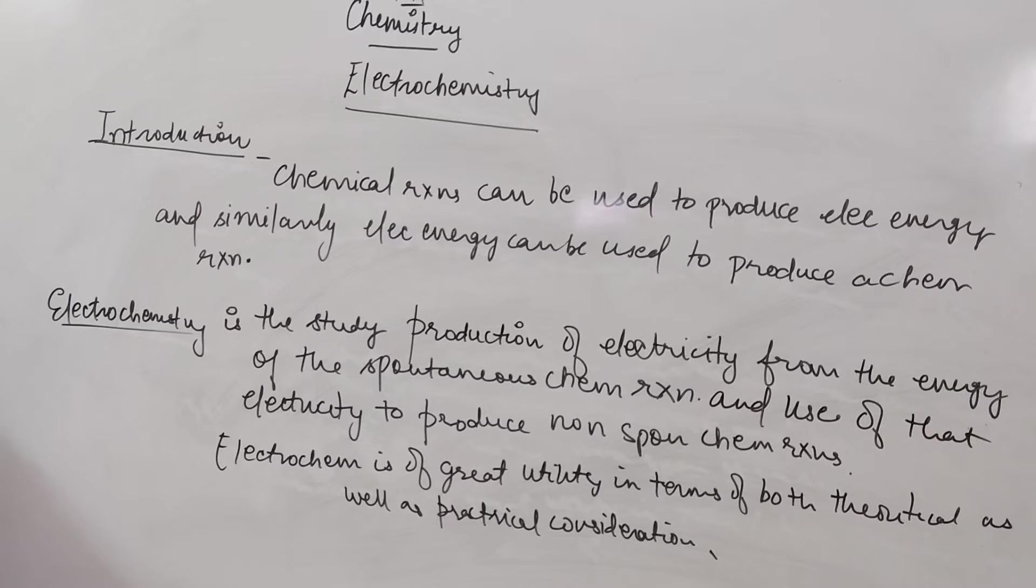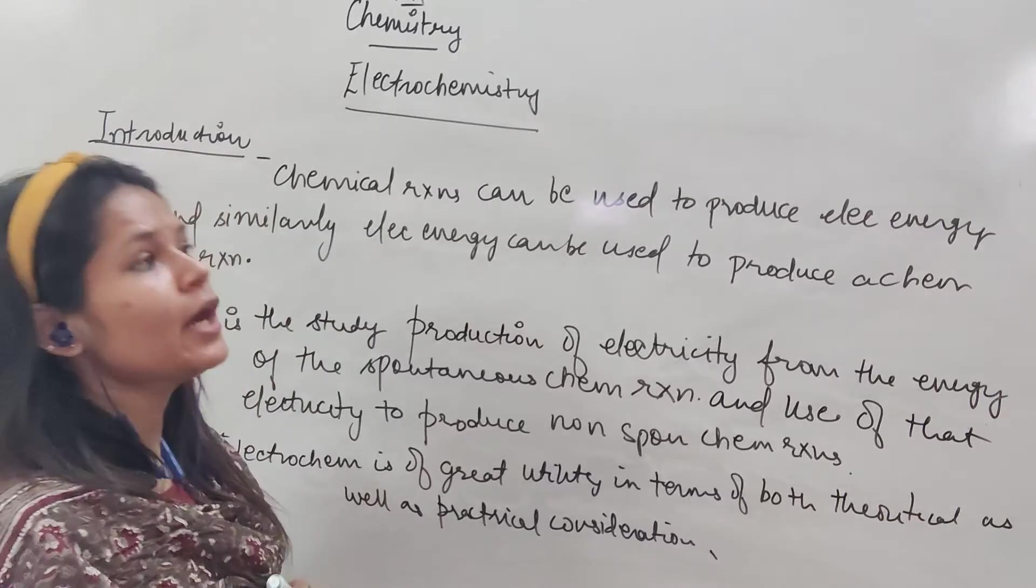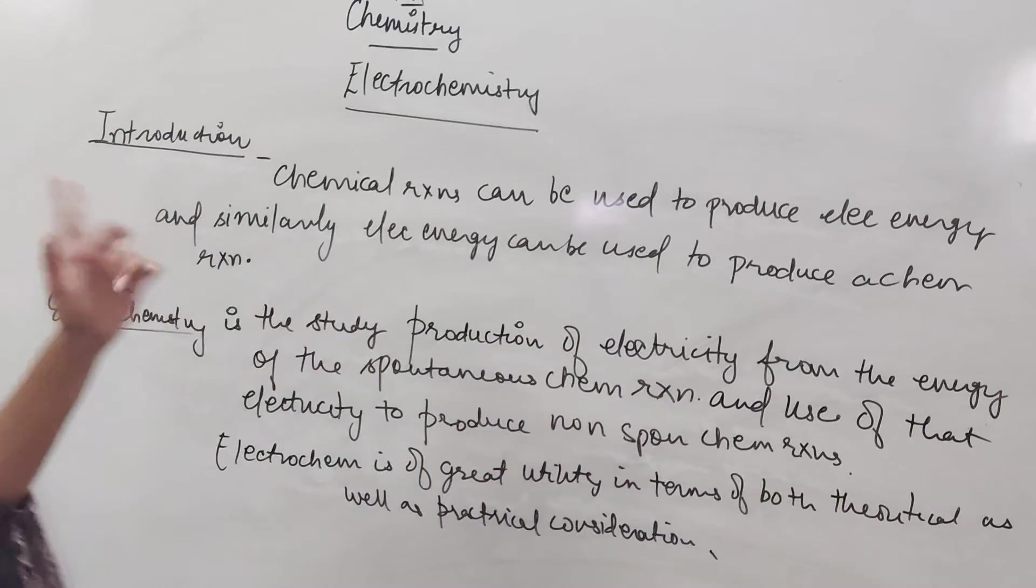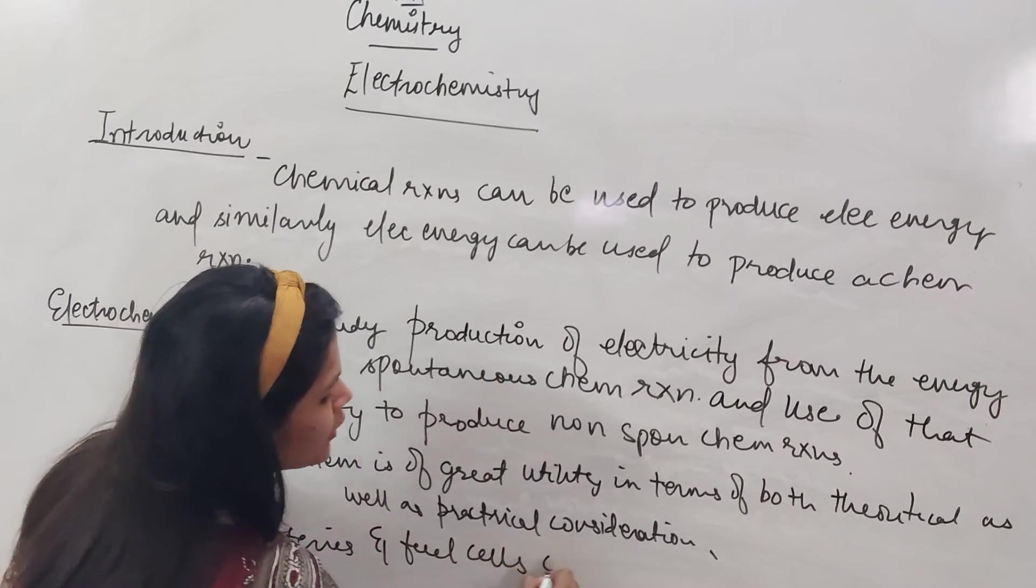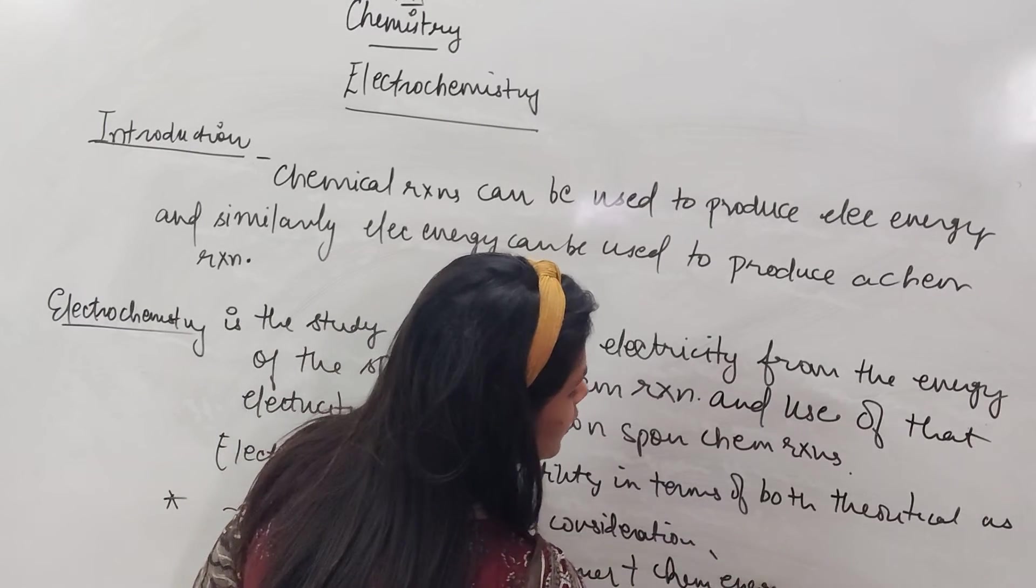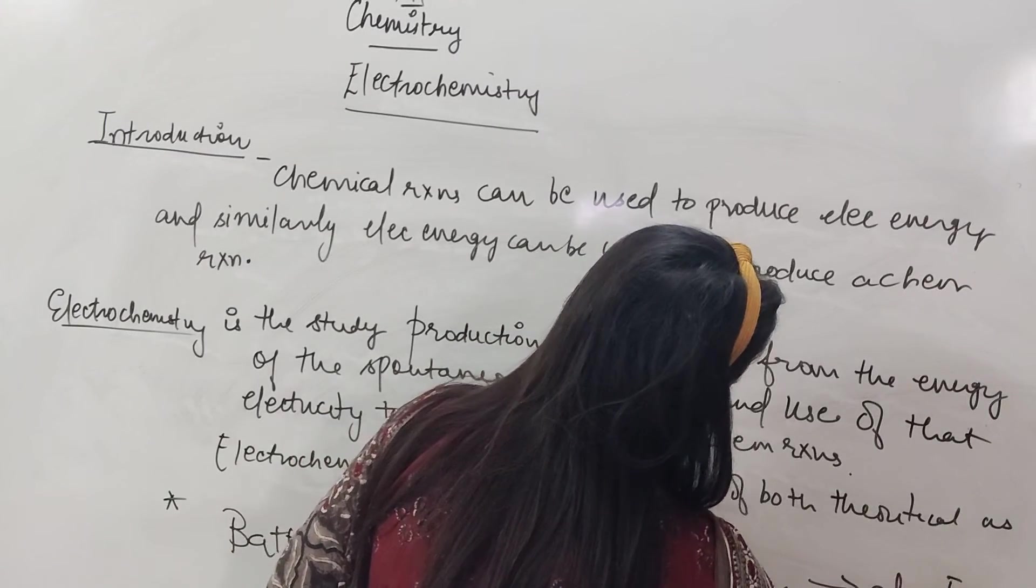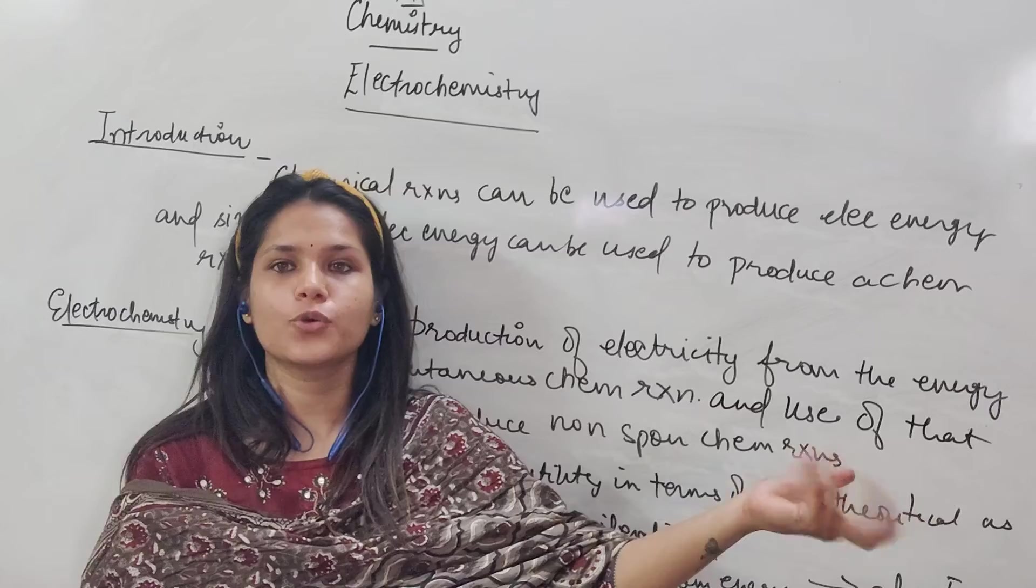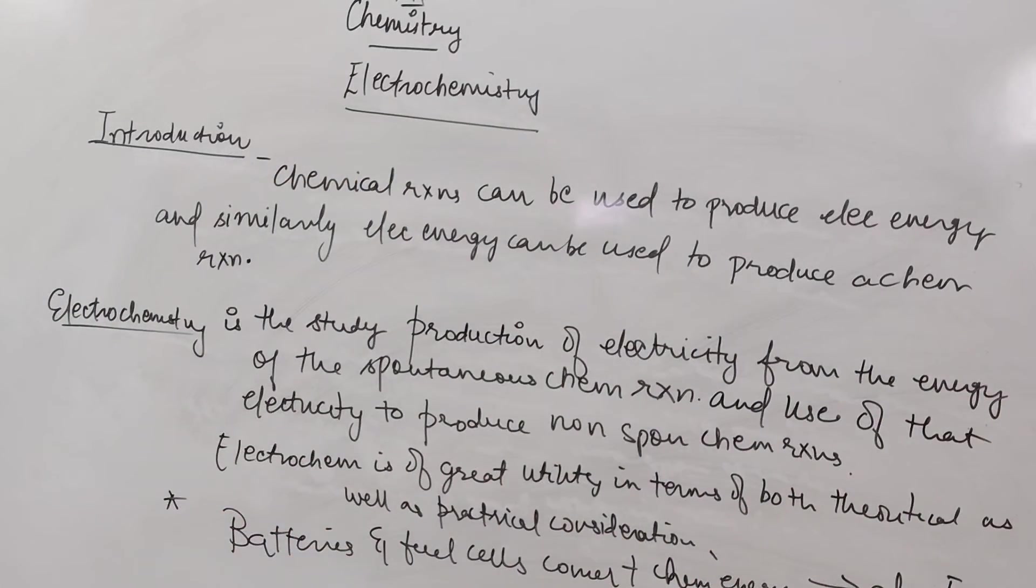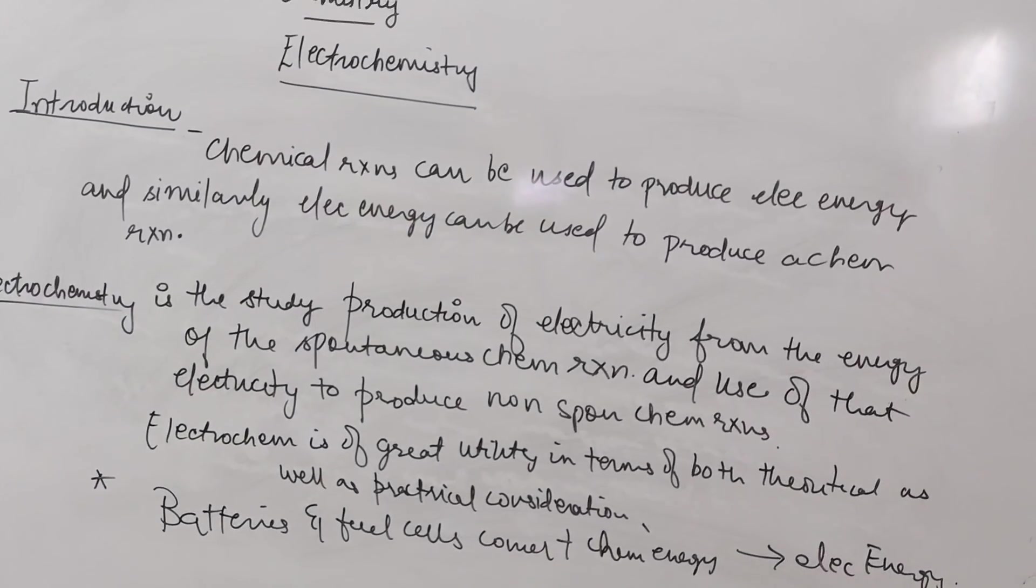Now we can see that many chemicals are produced by chemical reactions, and many are produced by electricity. Chemical and fuel cells convert chemical energy into electricity. Thank you very much.